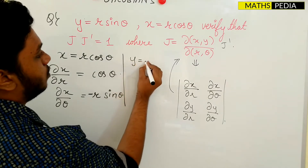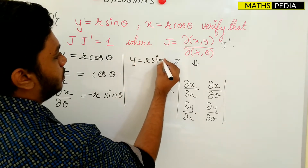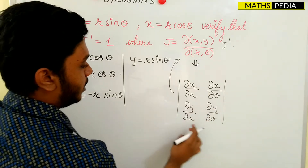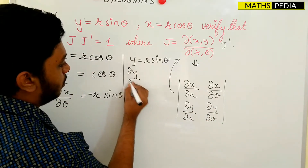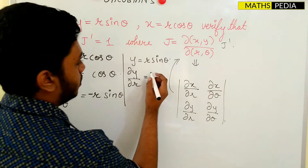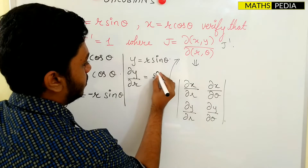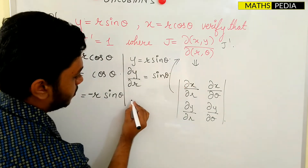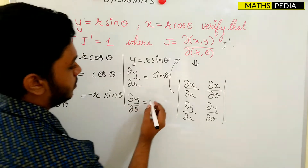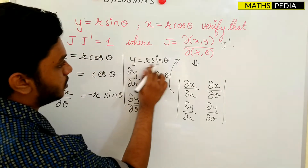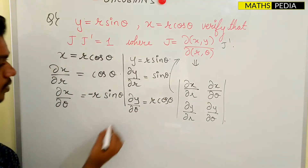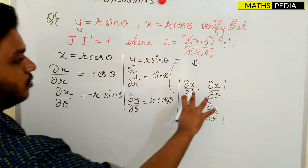Since y = r·sinθ, differentiating with respect to r gives ∂y/∂r = sinθ (r's differentiation is 1). Differentiating with respect to θ gives ∂y/∂θ = r·cosθ, since sinθ differentiation is +cosθ. Now we have all four elements needed for the determinant.